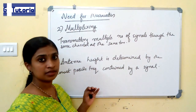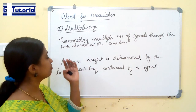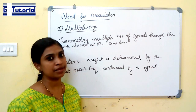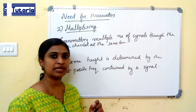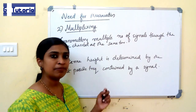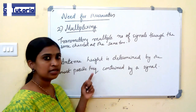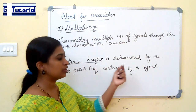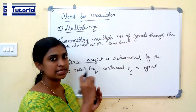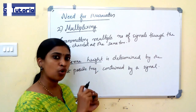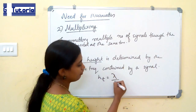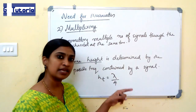Next is multiplexing. Modulation allows multiplexing, that is, transmitting multiple signals through the same channel at the same time. Without modulation, multiple signals cannot be transmitted simultaneously through the same channel. But by using modulation, multiplexing is possible. In the case of multiplexing, the antenna height is determined by the signal with the lowest frequency, and its height will be lambda by 4 of that signal.